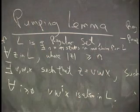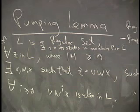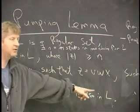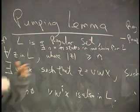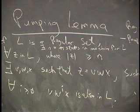Now, I can pump up the middle part as many times as I want, and that resulting string will end up in the same final state as the vwx did, because all I'm doing is saying, follow those symbols again on the loop, and then continue the way you did before in the x. So as many w's as you want will still get me to a final state, which means that vw^i x is also in L. Remember, this exponentiation means repeated concatenation. It just means doing it over and over again.